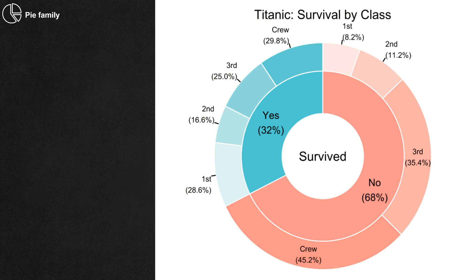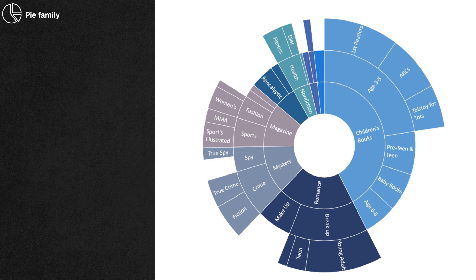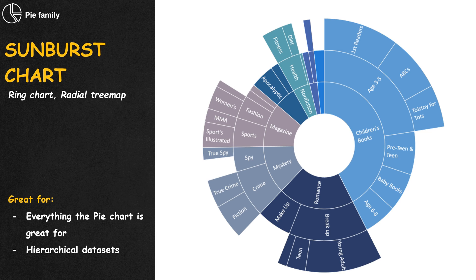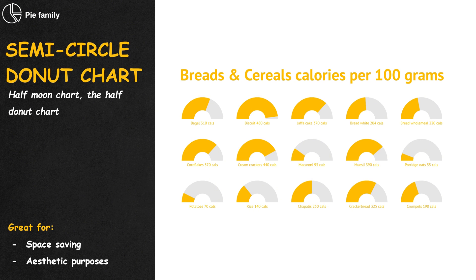When multiple donuts are placed on top of each other with the same center point, we have the multi-level pie chart. When a multi-level pie chart is used to illustrate hierarchical data, it becomes a sunburst chart. People sometimes cut the donut in half — the chart still works just fine. Some names for this are the semicircle donut, the half moon, or the half donut chart.